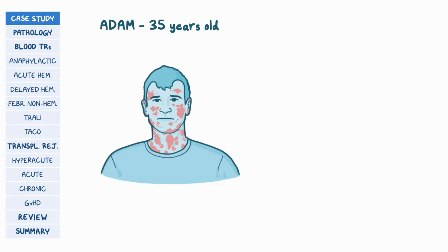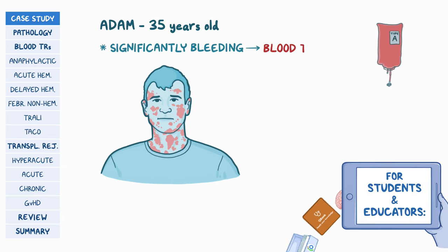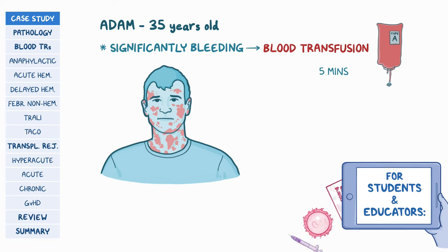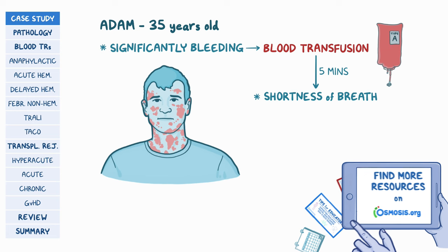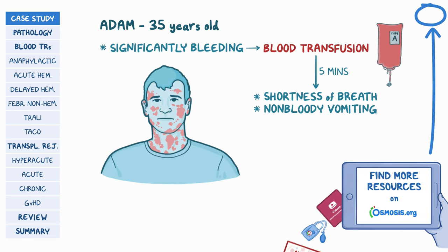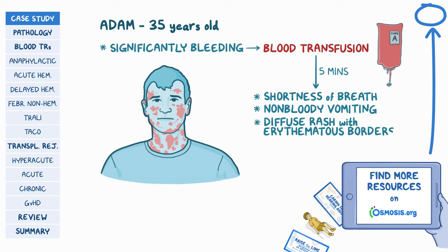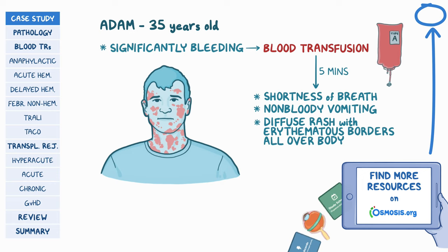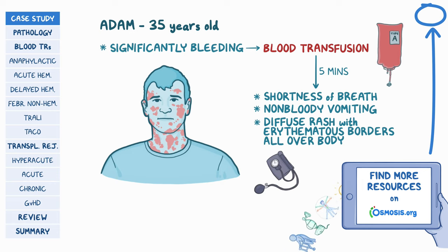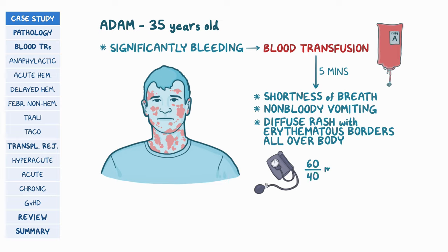35-year-old Adam is brought to the emergency department by ambulance after being involved in a motor vehicle crash. Upon examination, he is significantly bleeding from his thigh, so you decide to give him a blood transfusion. Five minutes later, he develops shortness of breath, one episode of non-bloody vomiting, and a diffuse rash with erythematous borders starts to appear all over his body. His blood pressure drops to 60 over 40 mmHg.